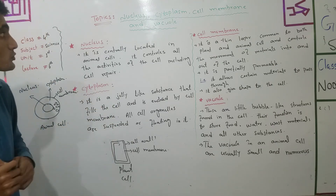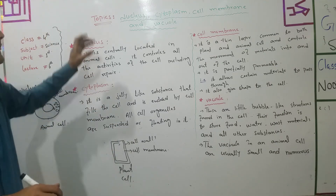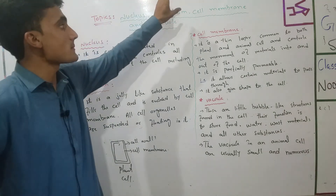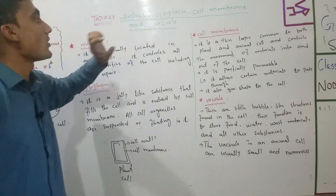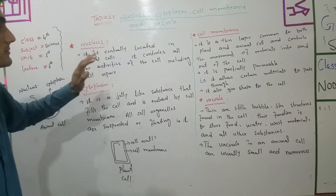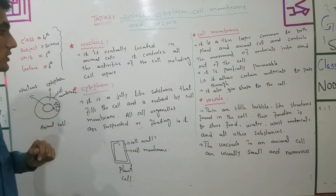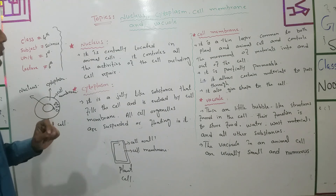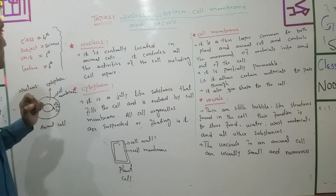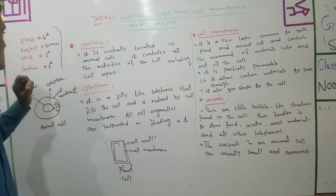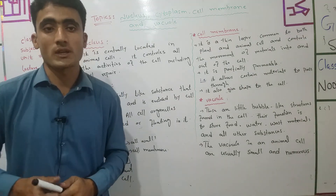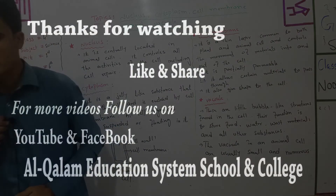So today we covered four topics: Nucleus, Cytoplasm, Cell Membrane, and Vacuole — for Class 4th, Chapter number 1. That is enough for today. Thank you.